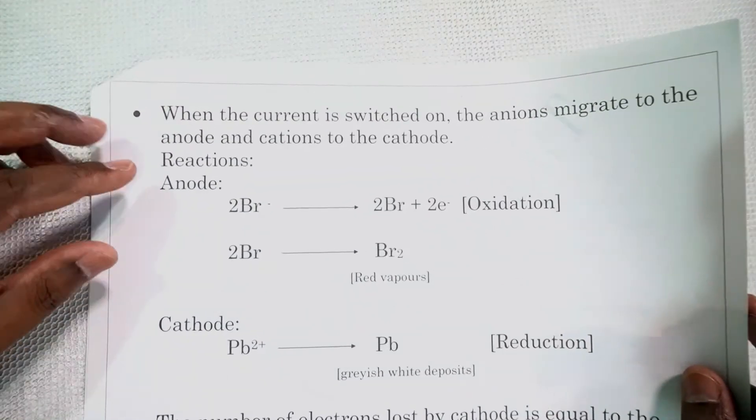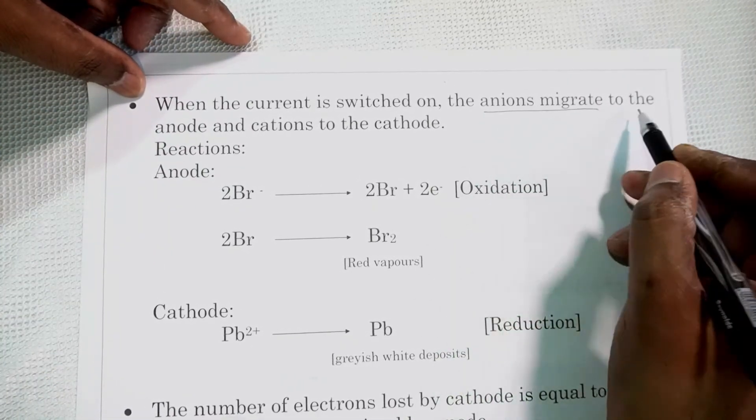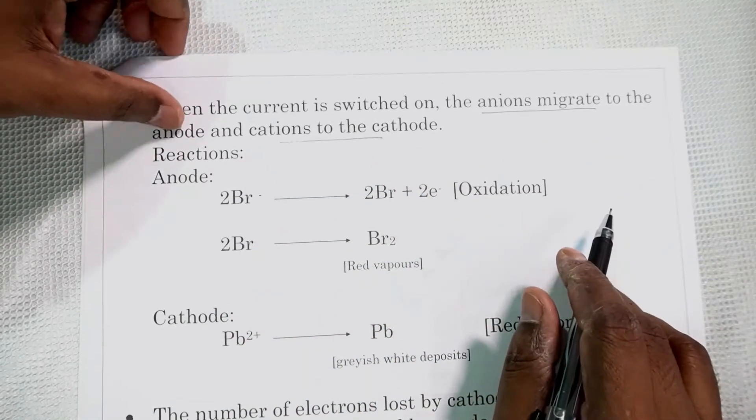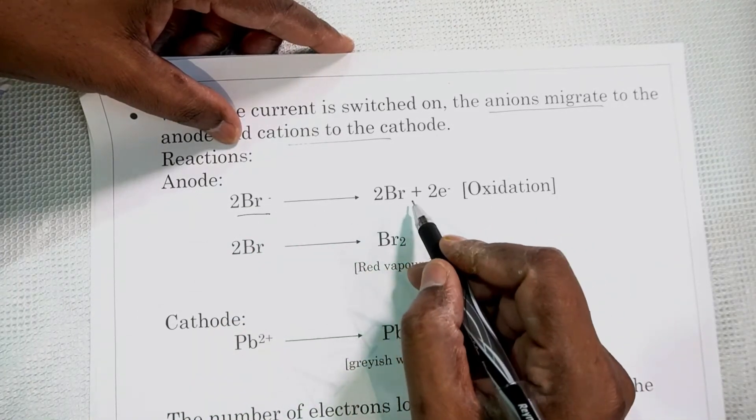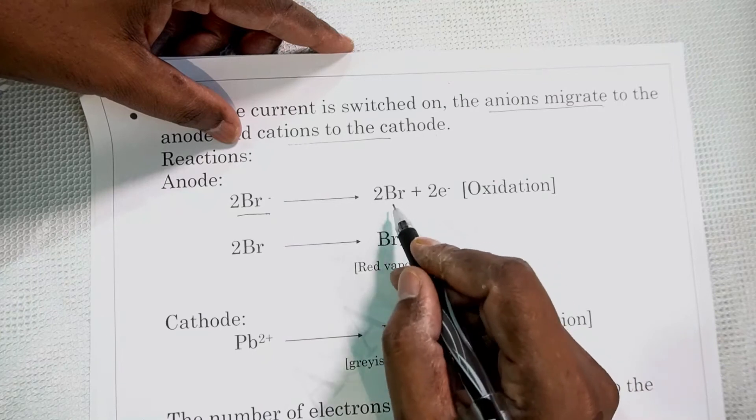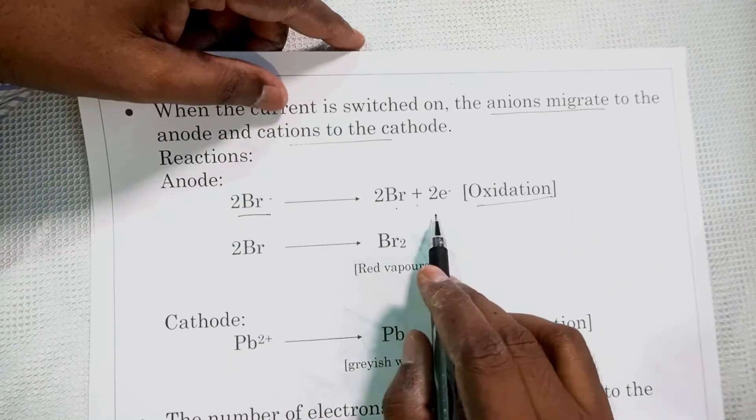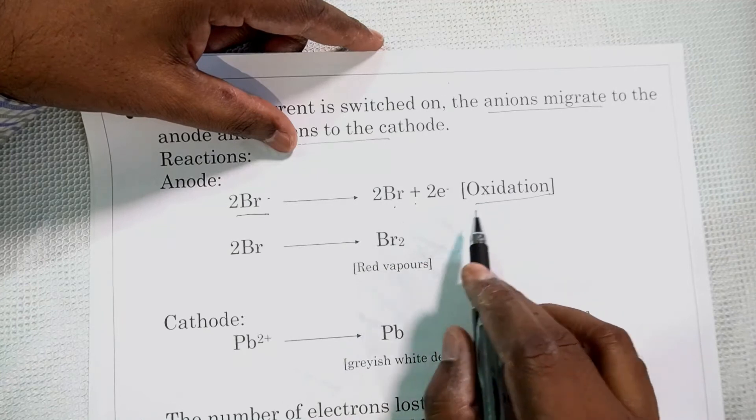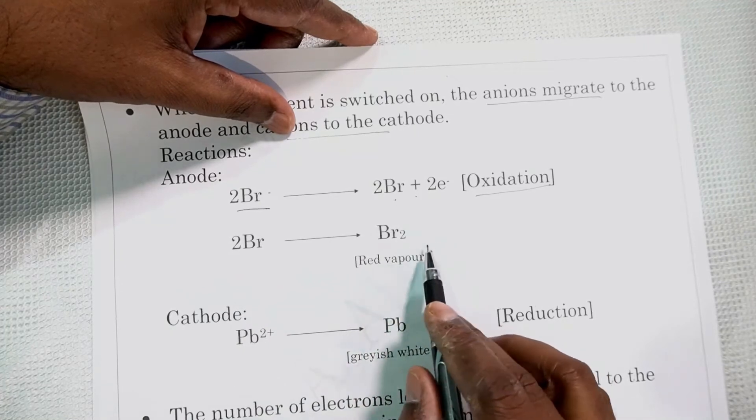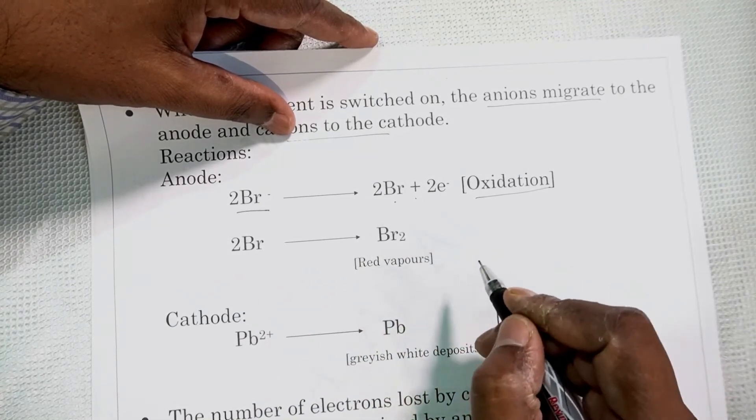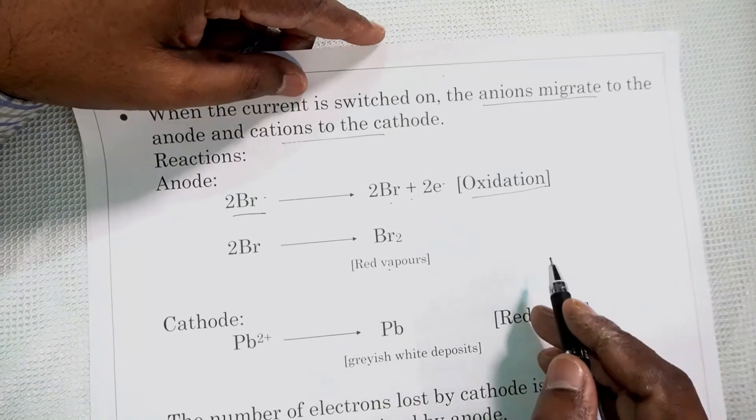Let's see when the current is switched on. We know that the whole process starts when the current is switched on. When the current is switched on, the anions migrate to the anode and the cations to the cathode. We are familiar with that. So what is the reaction happening at the anode? We have the Br minus ion, that is bromide ions coming here. It will lose electrons and form bromine atoms. Two atoms of bromine produce. Now loss of electron here is oxidation. So because bromide ions are losing electrons and forming bromine atoms, it is oxidation. Now two of the bromine atoms combine to give bromine molecule and it will come out as red vapors at the anode. The anode you will see red vapors. This is the observation at the anode. Red vapors of bromine coming out because the molecules are formed.